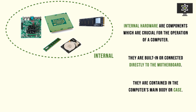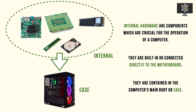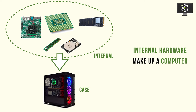Internal hardware components are crucial for the operation of a computer. They are typically connected directly onto what is called a motherboard, which we will discuss in the next video. They're contained within the computer's main body or case - that's where we can physically see the difference between internal and external hardware. Whatever is in the casing is typically what is essential for operation, and it's meant to be in there for an extended period of time.